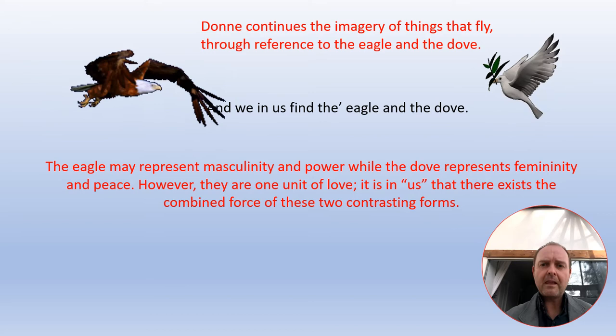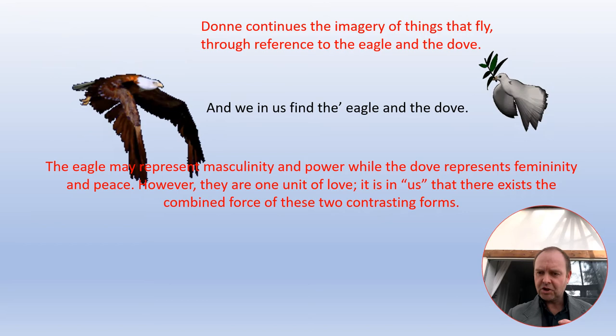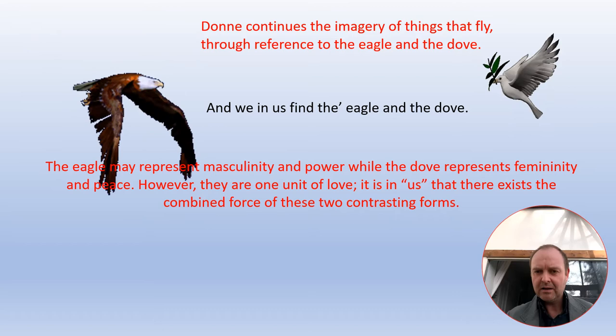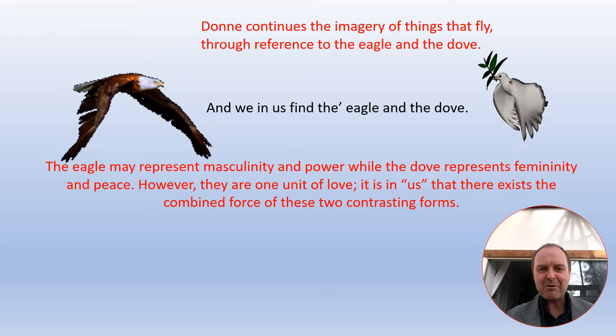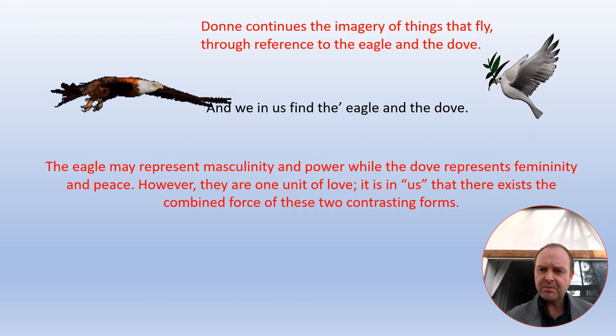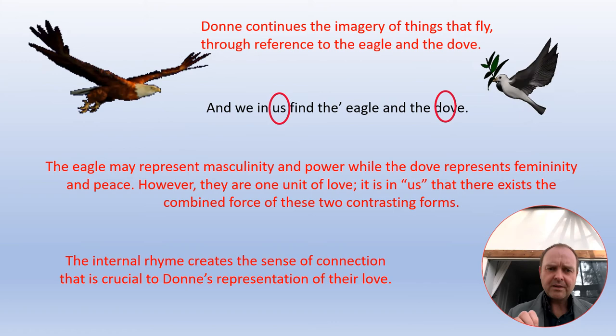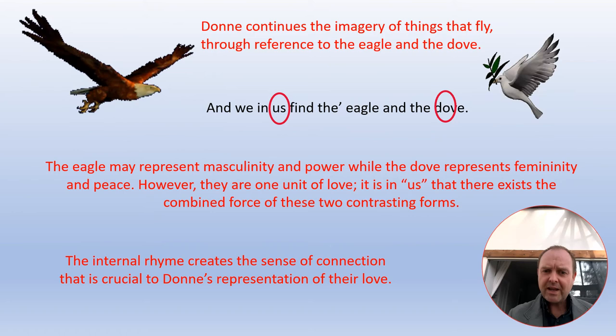He continues this imagery of things that fly through reference to the eagle and the dove: 'And we in us find the eagle and the dove.' Once again, you've got this sense of two within one. The eagle traditionally represents masculinity and power, while the dove represents femininity and peace. However, they're one combined unit of love — it's in us that there exists the combined force of these two potentially contrasting forms. Donne's presenting them as a single force of love rather than two distinct individuals. The internal rhyme of 'we in us' creates a sense of connection crucial to Donne's representation of their love as intrinsically connected.